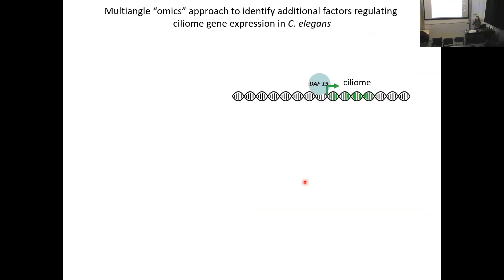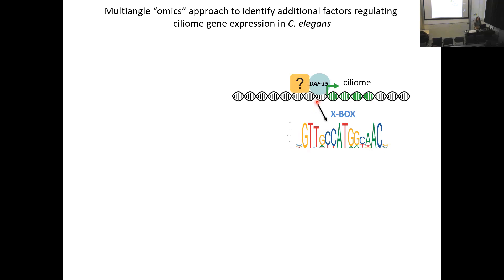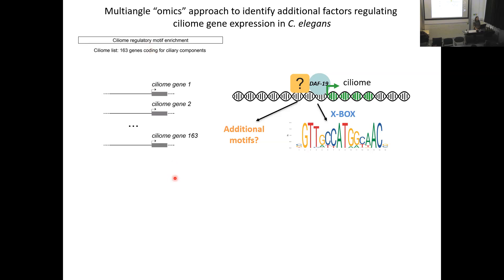We took a bioinformatic approach to find a candidate working together with DAF-19. DAF-19, like all RFX factors, binds to particular binding sites called X-boxes, which leave a signature in ciliome genes. We reasoned that the other hypothetical transcription factor might also leave a signature associated with the regulatory regions of the ciliome. We built a list of 168 ciliome genes and looked for enrichment in transcription factor binding sites. We did identify the X-boxes as expected, but unfortunately we didn't find any clear match for another particular transcription factor family.